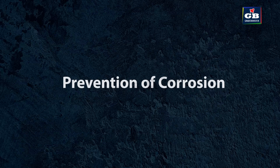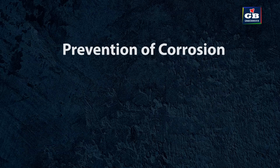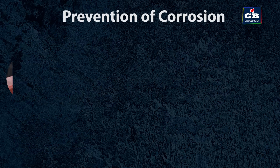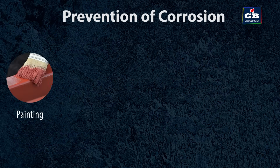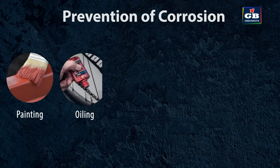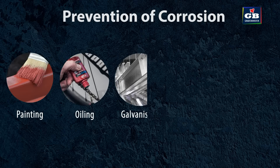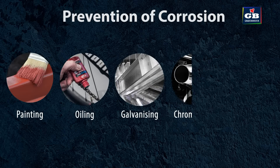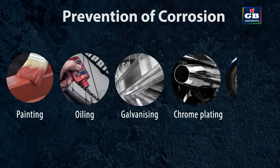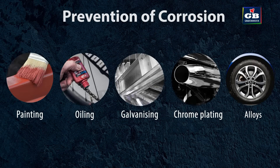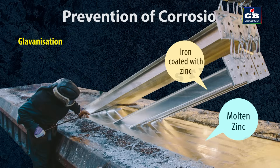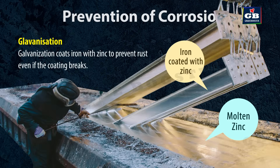Prevention of corrosion: corrosion can be prevented by using methods like painting, oiling, galvanizing, chrome plating and alloys.